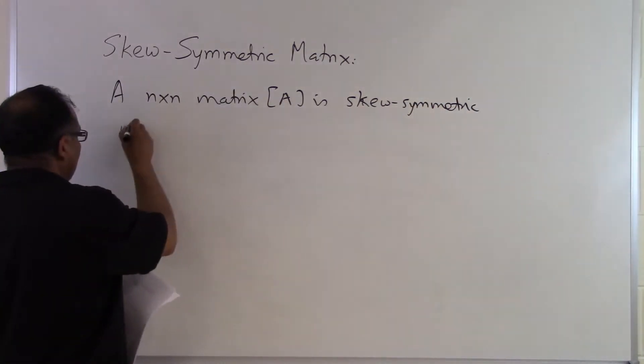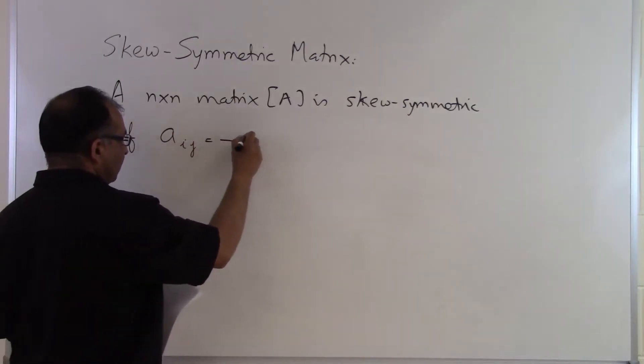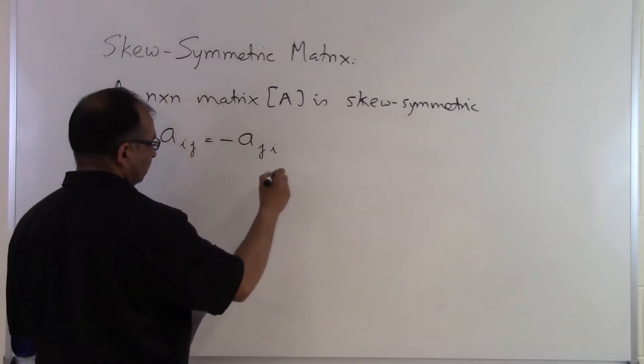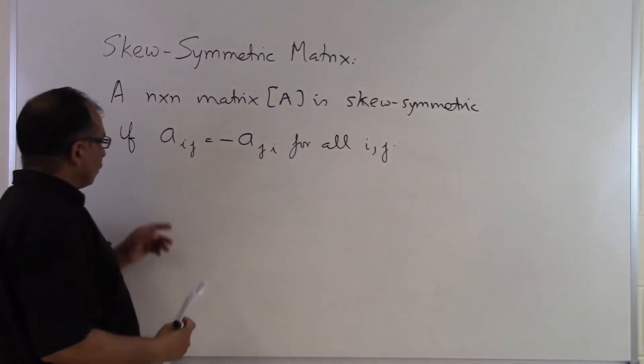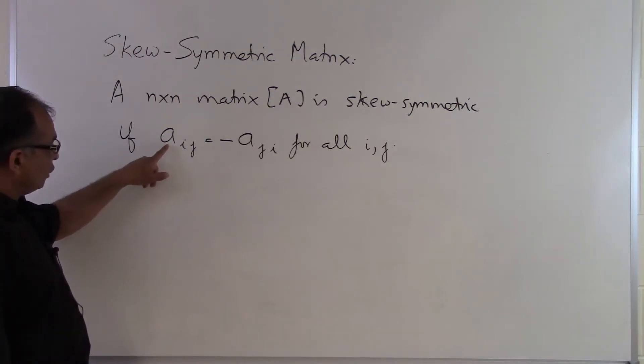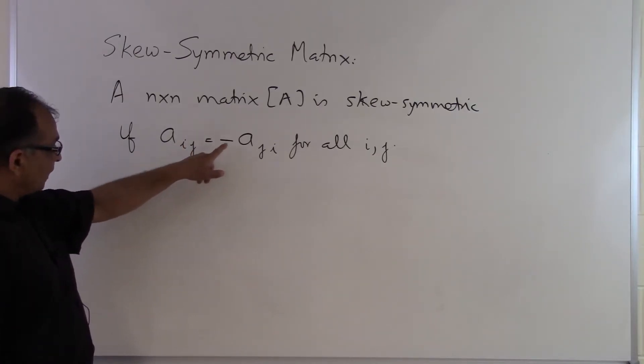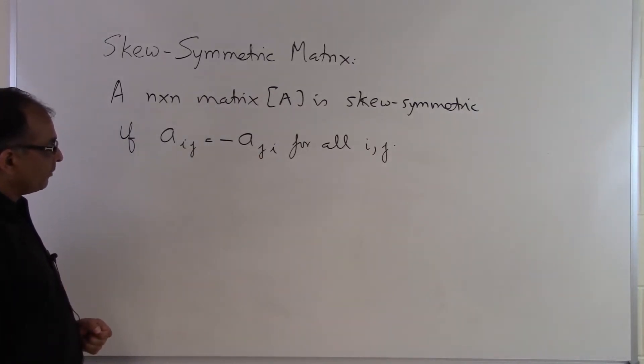If A_ij is equal to minus A_ji for all i, j. So what we mean by here is just like a symmetric matrix but it is a skew symmetric matrix meaning that the negative element is here. So the ith row jth column is the negative value of the jth row ith column for all values of i, j.